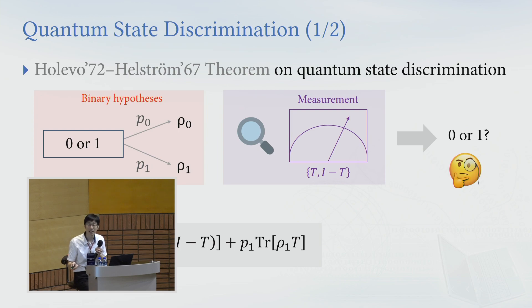Binary state discrimination is given by this optimization, and they show that this optimization has a closed-form expression like this: one-half minus the trace distance between the scaled rho zero and rho one.